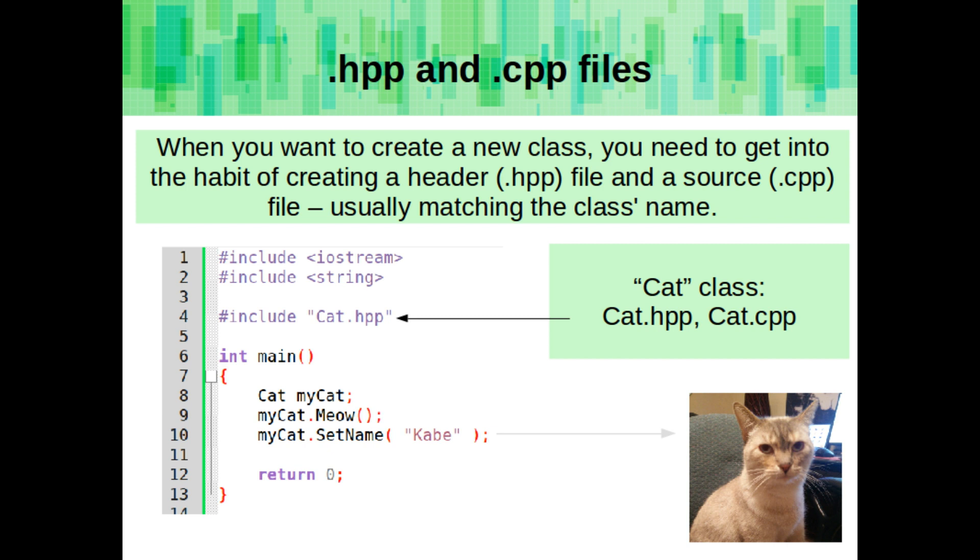When you want to create a new class, you need to get into the habit of creating a header file and a source file, usually matching the class's name. So here, I have a class called cat, and I've named the file cat.hpp.